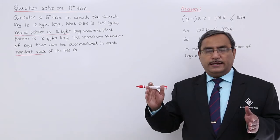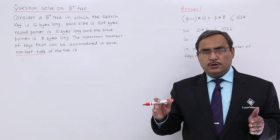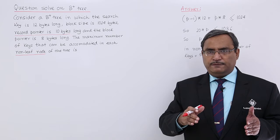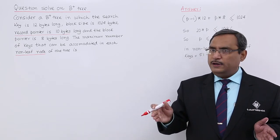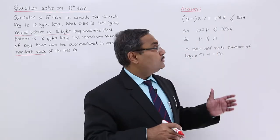We know that in case of B plus tree, in case of non-leaf nodes, if we have P number of pointer fields, then we shall be having P minus 1 number of key fields. So let us go for the solution.